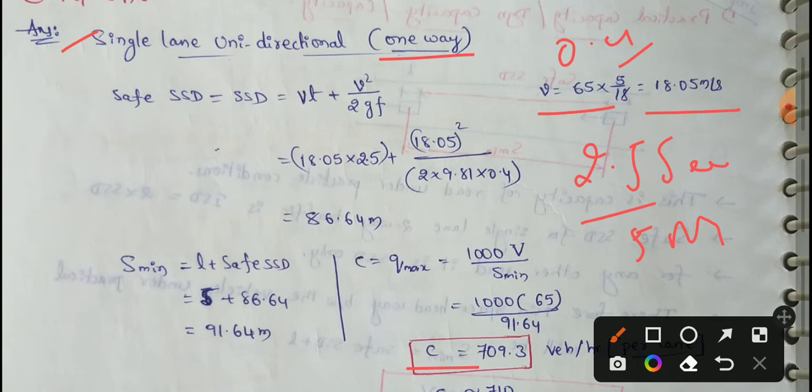First, we have 2.5 seconds reaction time as a practical condition. Practical capacity as safe SSD equal to Vt. We have to measure the formula. Vt plus V square by 2gf. V value is 18.05.